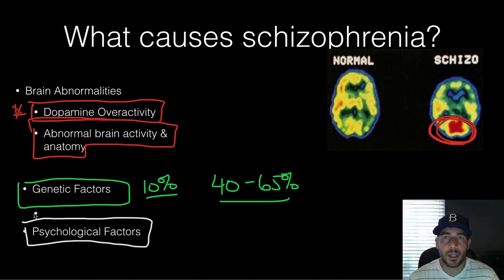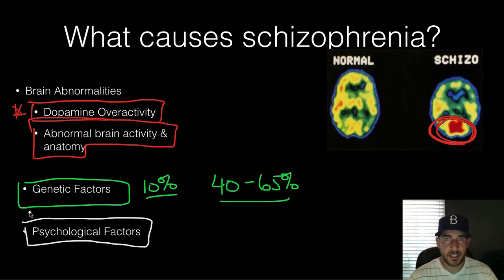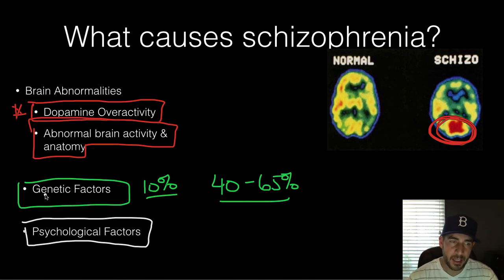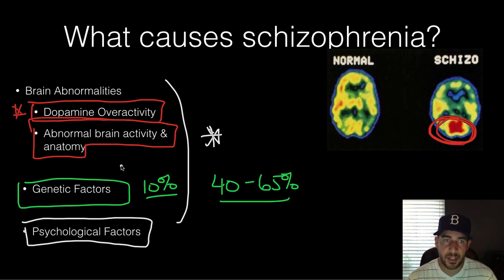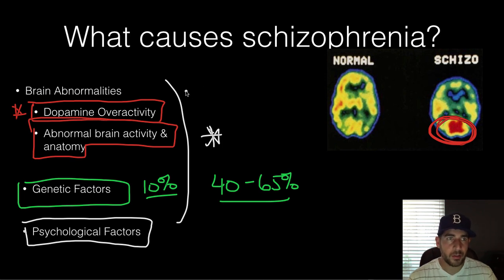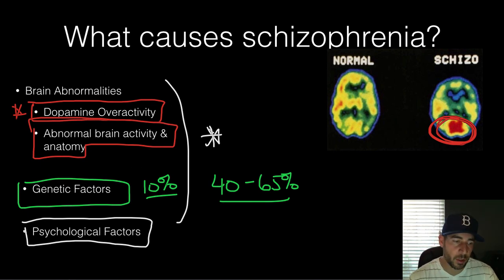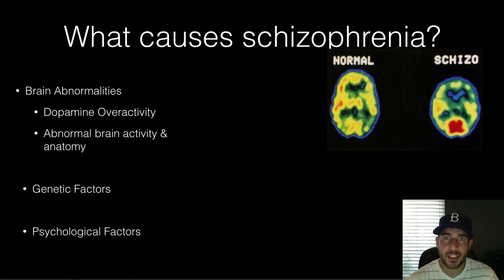Psychological factors used to be thought to play a role — in older days, a mother who was distant and not caring was believed to cause a child to be schizophrenic, but we've shown that's not true anymore. The key, like a lot of things, is that it's a combination of everything that plays a role in schizophrenia. Schizophrenia is usually diagnosed between ages 20 and 40 — you don't see a lot of children diagnosed with it, which is interesting.